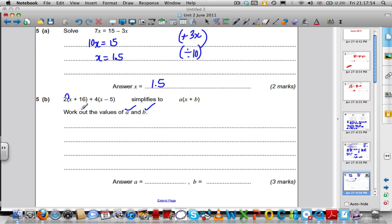Expanding brackets. Now, let's collect like terms. 2x plus 4x is 6x, and 32 take away 20 is equal to 12, so we have plus 12.